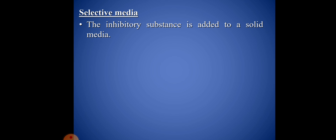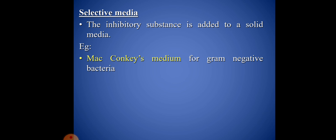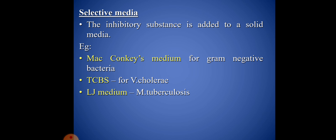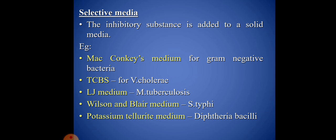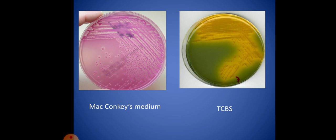Selective media have inhibitory substances added to a solid medium. Examples: MacConkey medium for gram-negative bacteria, TCBS for Vibrio cholerae, LJ medium for tuberculosis, Wilson and Blair medium for Salmonella typhi, and potassium tellurite medium for diphtheria bacilli.